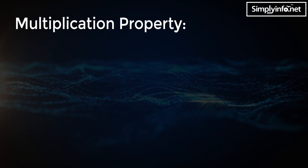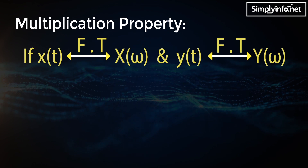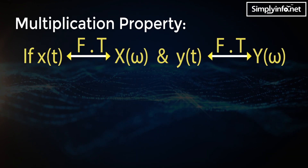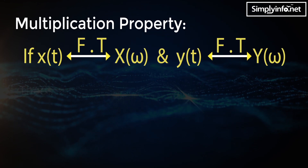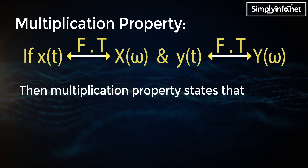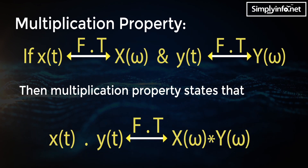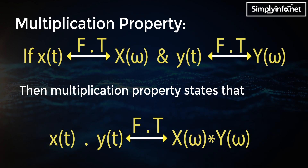Multiplication property: if Fourier transform of x(t) is X(ω) and Fourier transform of y(t) is Y(ω), then the multiplication property states that Fourier transform of x(t)·y(t) is equal to the convolution of X(ω) and Y(ω).